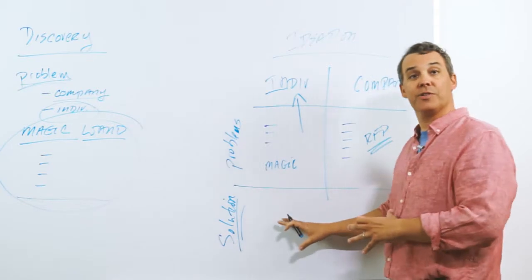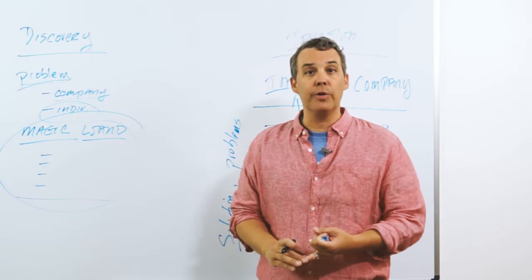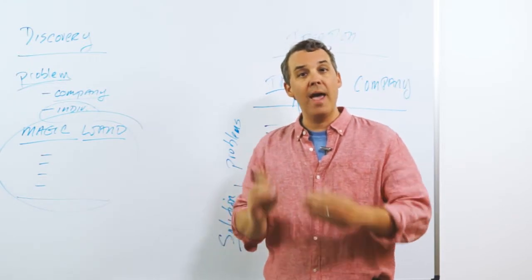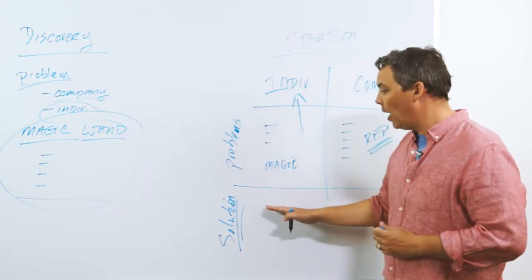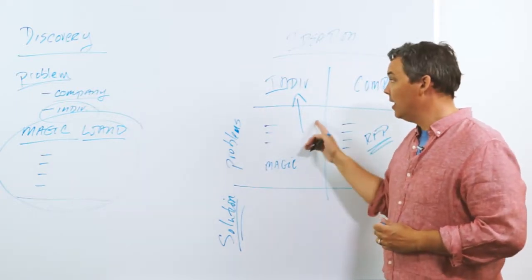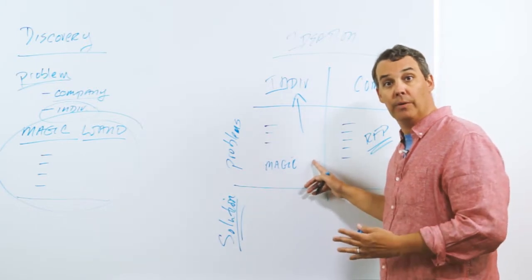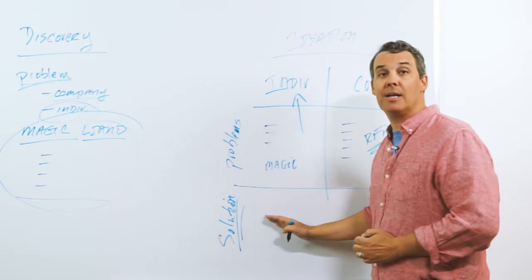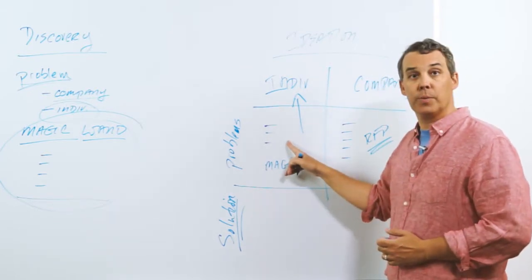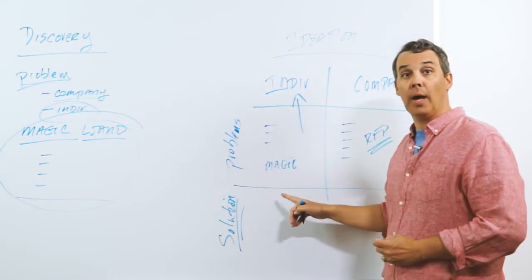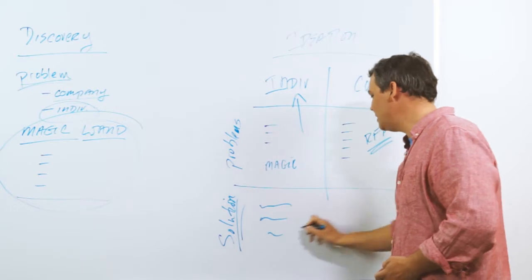And we start to brainstorm all these solutions. And that's why you need everyone in the room, right? You want to have the domain expert. You want to have the delivery team. You want to have the business development person. You want everybody that can give an idea in that room. And you just start to say, what are the ideas? What are the solutions that solve these problems from an individual point of view? What are they? It can be crazy. It doesn't matter. There aren't any bad ideas. All you're trying to do is get the team to think about how you solve this individual's problem and his or her magic wand. Then you do company as well. And you go through that and you're going to come up with all these great ideas.